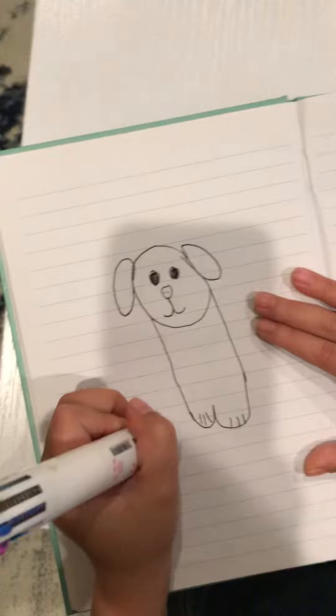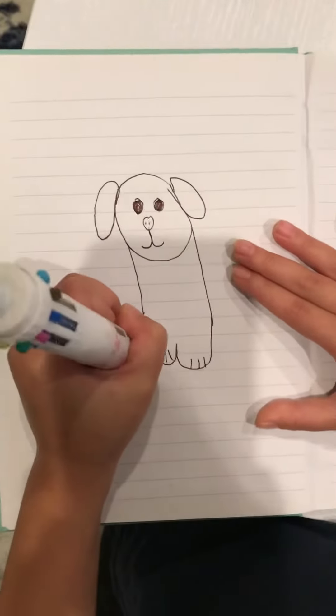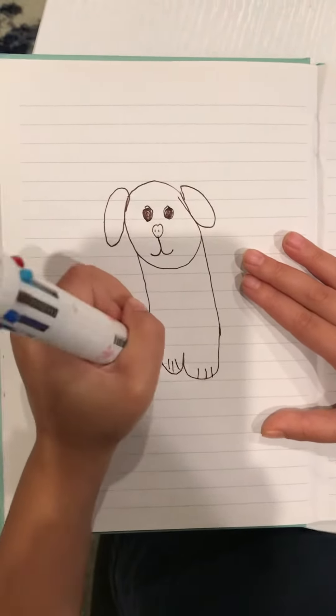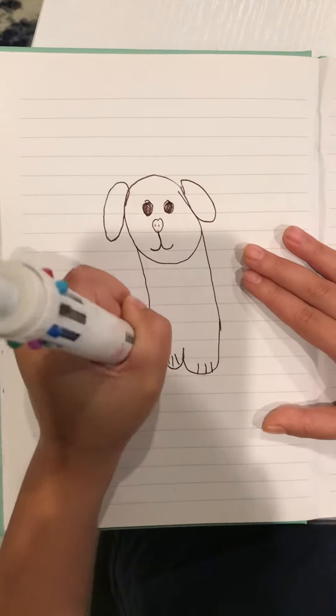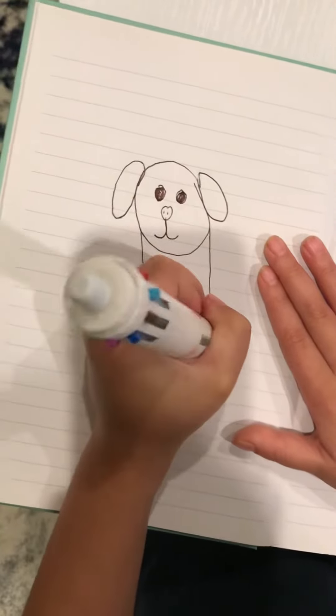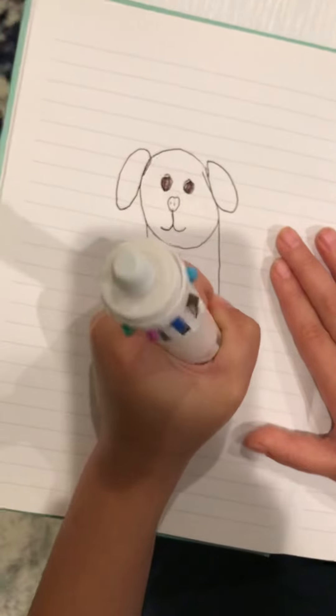Then for the back leg, you put it like this. One, two, three, and the other. One, two, three.